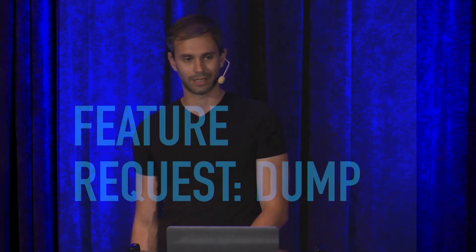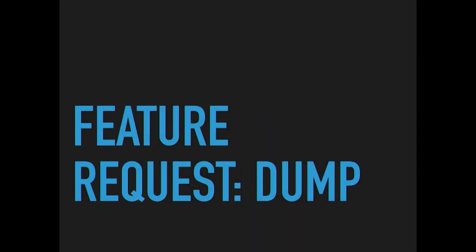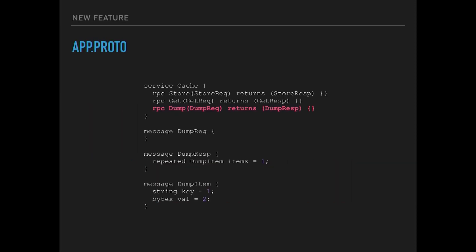You get a new feature request: a dump operation — give me the entire state of the cache. So you define a new dump method. You create a dump request object that takes nothing since you're dumping the whole map, then create a 'repeated' set of items. This is an interesting thing about the gRPC protobuf definition: there's no array type, you just say 'repeated'. You essentially have an array of all items in your map, key and value for each one.